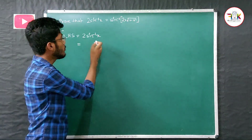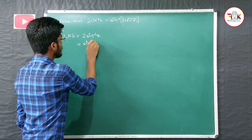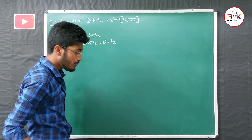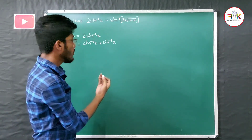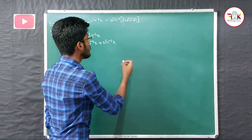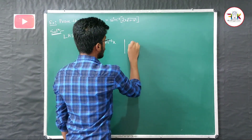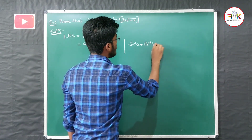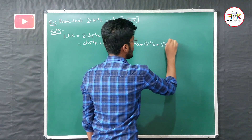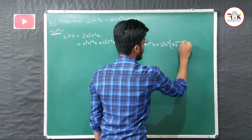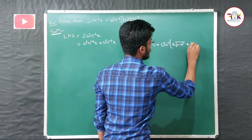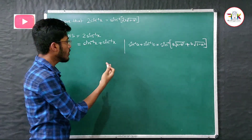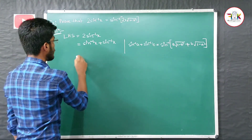We can write 2·sin⁻¹(x) as sin⁻¹(x) + sin⁻¹(x). Now I'm going to use the formula: sin⁻¹(a) + sin⁻¹(b) = sin⁻¹(a·√(1-b²) + b·√(1-a²)). This is the formula we will apply here.